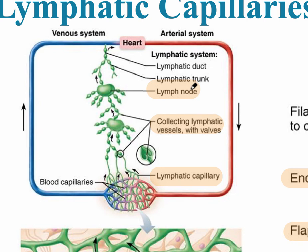Those vessels get larger and larger, leading into lymphatic trunks, and then lymphatic ducts. As you can see, it goes back towards the heart, just like the blood in the veins.